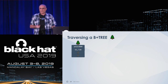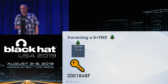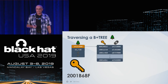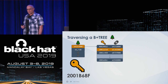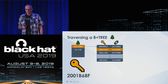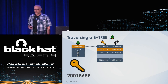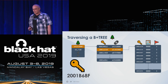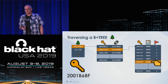Traversing with an example key: we calculated our page key to be 2001B68F. We dereference the pointer to the root node and see ranges of keys with pointers to next nodes. Since 2001B68F is greater than 2001A210 but less than the following key, our range belongs to the second entry. By dereferencing the associated pointer, we reach the leaf node and find our key associated with a store index — in this case, store index zero.